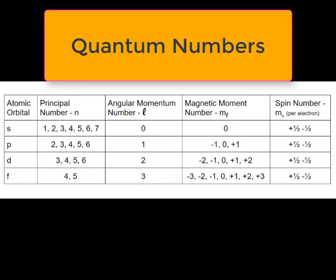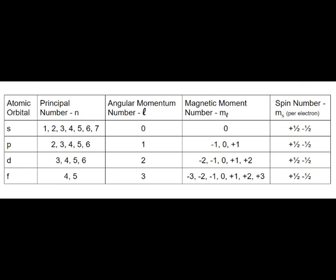The electrons that occupy these atomic orbitals get assigned specific quantum numbers: N, L, M sub L, and M sub S. That's the principal quantum number, the angular momentum number, the magnetic momentum number, and the spin number. I'll try to explain all four of these numbers in more practical terms.